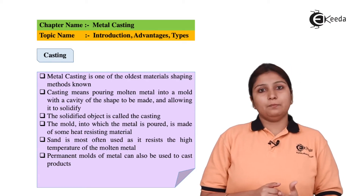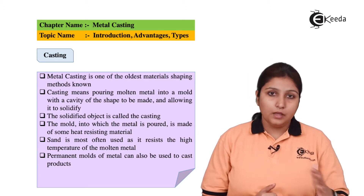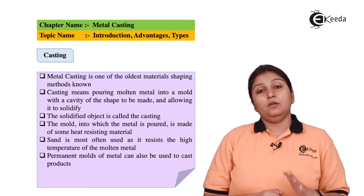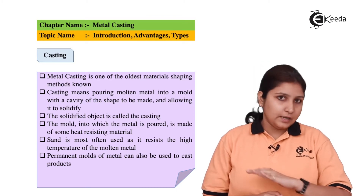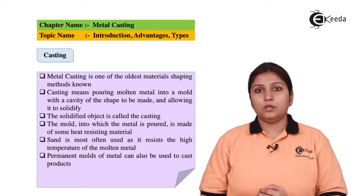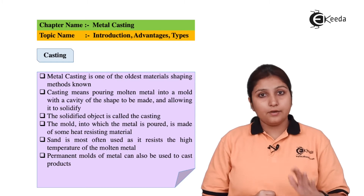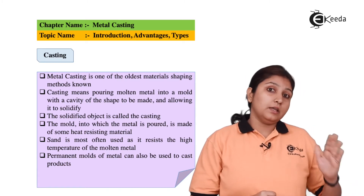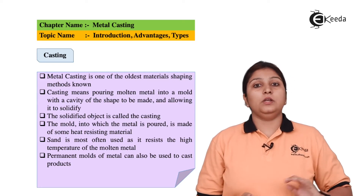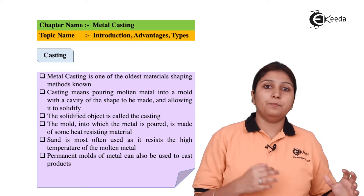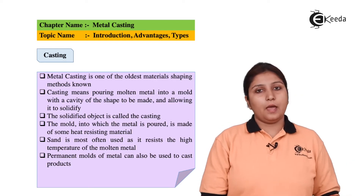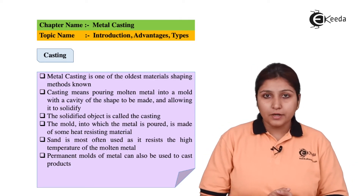We ram some sand into the pattern. Ramming the sand means we keep adding sand and pat it down so that the sand settles with no air impurities. We add sand again and ram it again. Sand making is a totally different process — we need different materials like silica, water, and clay. We mix it, ram it, heat it, and our sand is made.